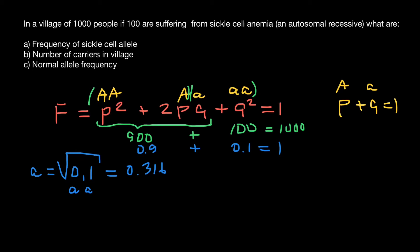Taking the square root of 0.1, we get 0.316, and this is a rounded number. Now that we know the frequency of the recessive allele q = 0.316, we can find the frequency of the dominant allele. Since the recessive allele plus the dominant allele must equal 1, the frequency of the dominant allele p is 1 minus 0.316, which gives us 0.684.